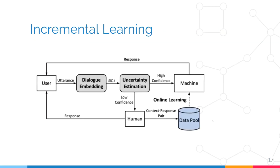Moving on to incremental learning. Incremental learning aims to keep the system updated and allows dynamic learning to add new knowledge whenever needed. One approach that inspired our work is the IDS system, which consists of three modules: a dialogue embedding module that extracts needed information from the user's utterance, an uncertainty estimation module that evaluates how relevant the system's response is to the user's question, and if not relevant enough, asks a human in the loop to respond. This response is then added to the knowledge base and the model is updated through an online learning module.